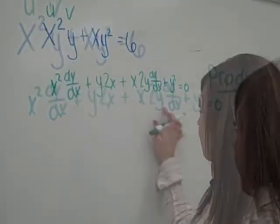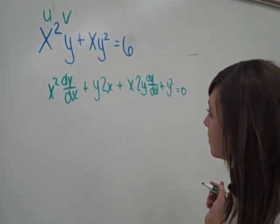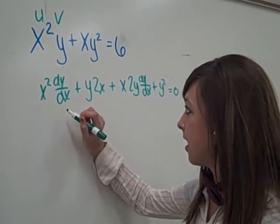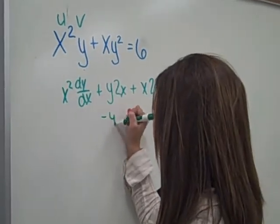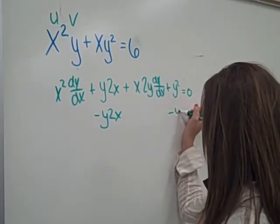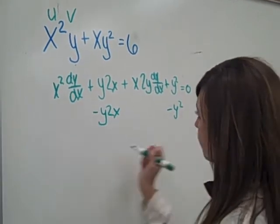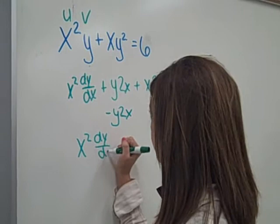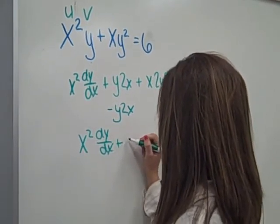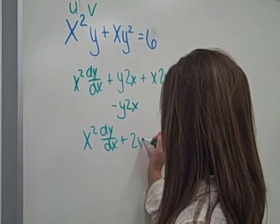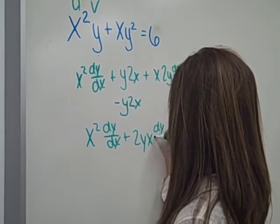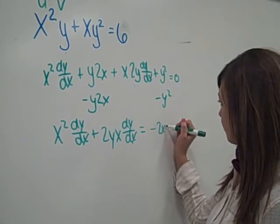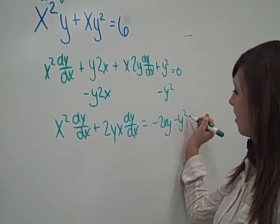Okay, so now that we have this problem, we're going to have to simplify it. So we're going to start by taking out anything that doesn't have a dy over dx. So we're going to have minus 2xy and minus y squared. And we're going to take it out to the other side. So we're going to have x squared dy dx plus 2xy dy dx equals negative 2xy minus y squared.